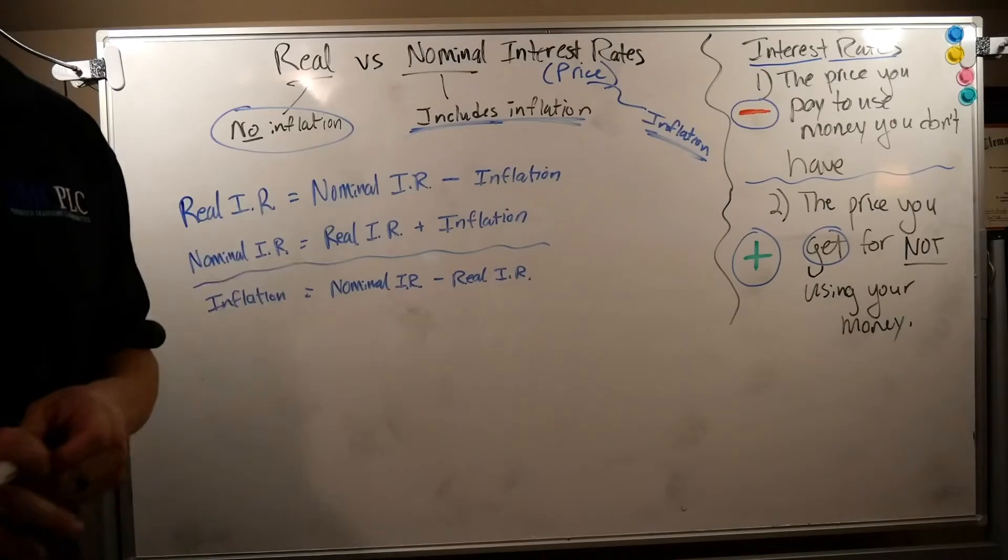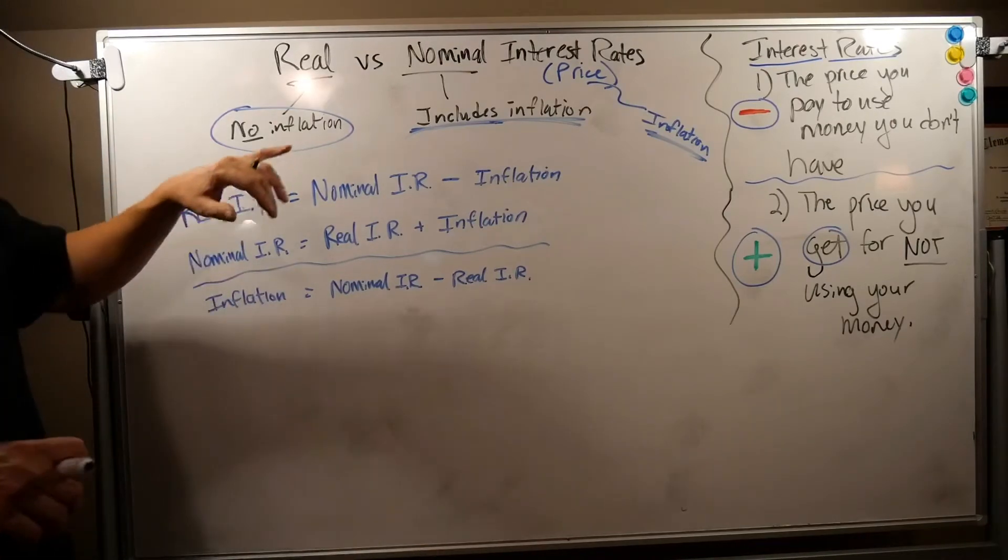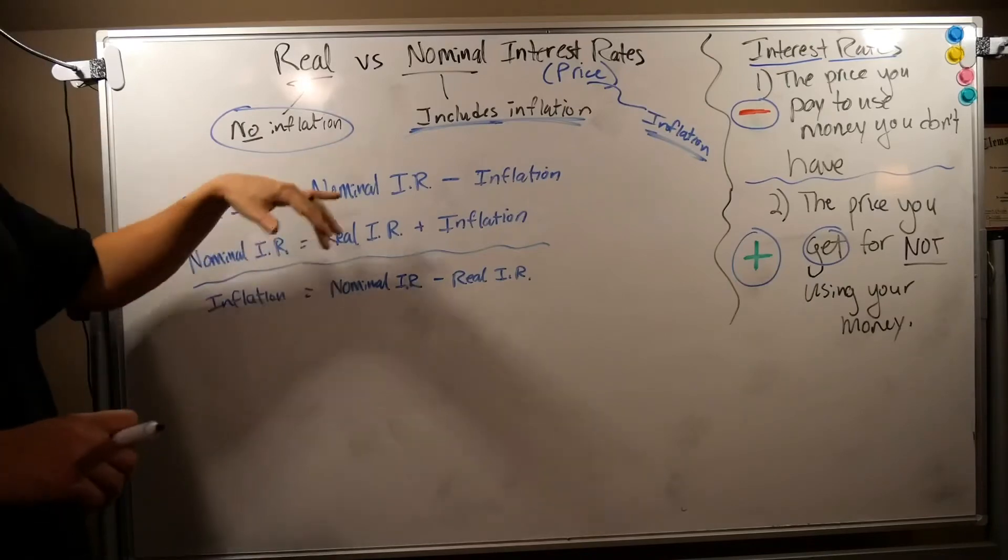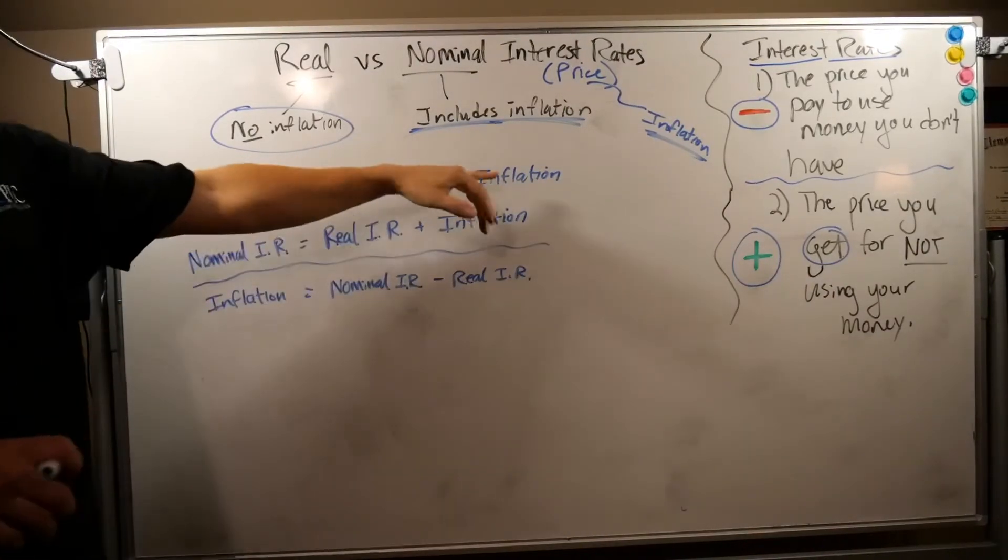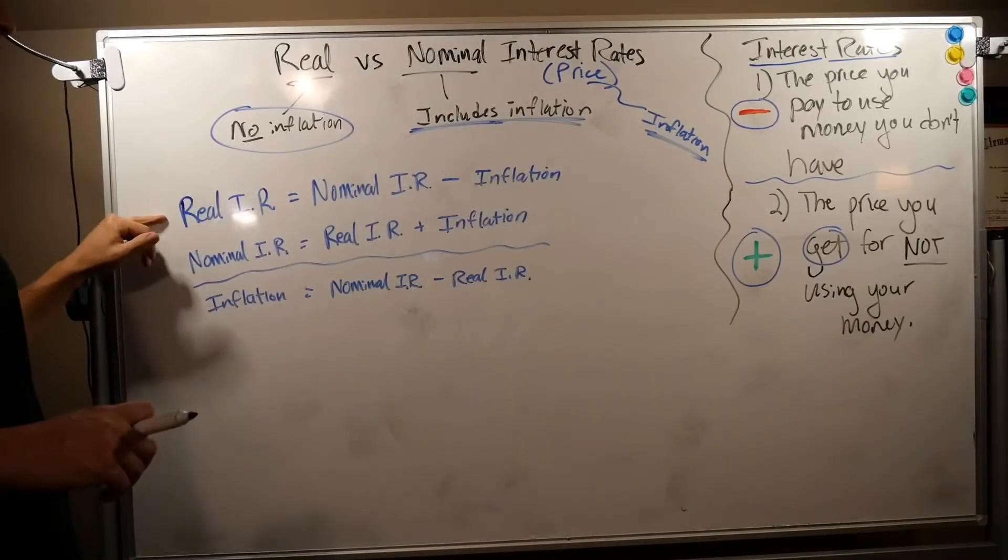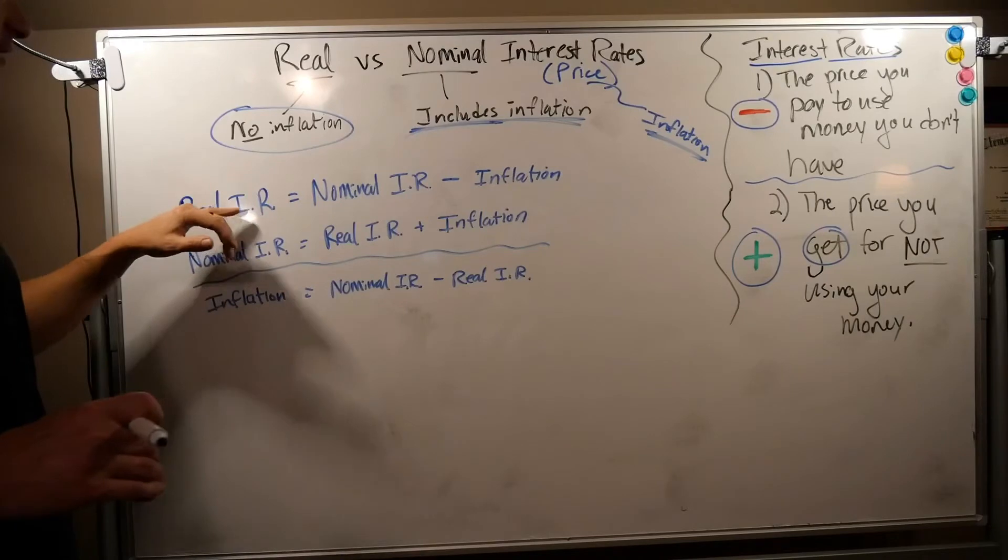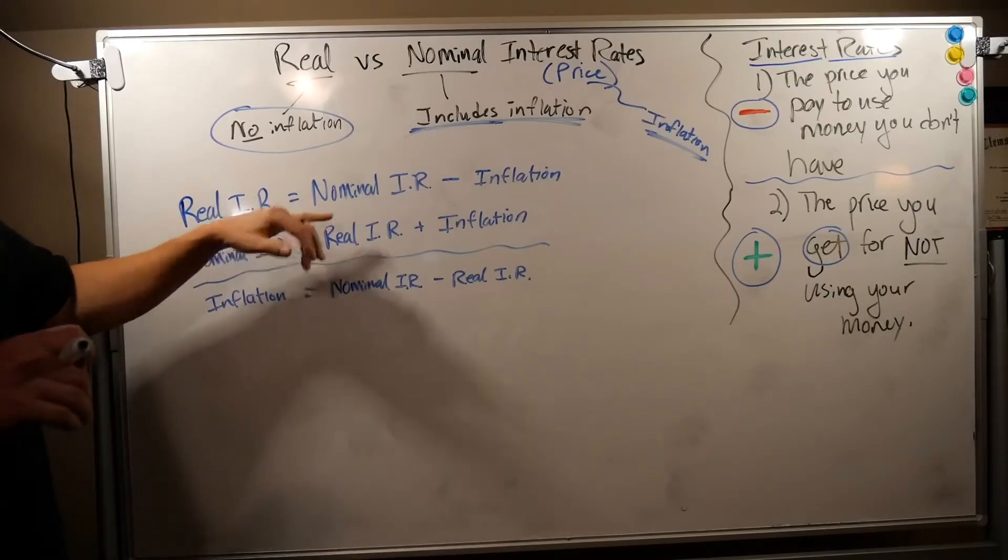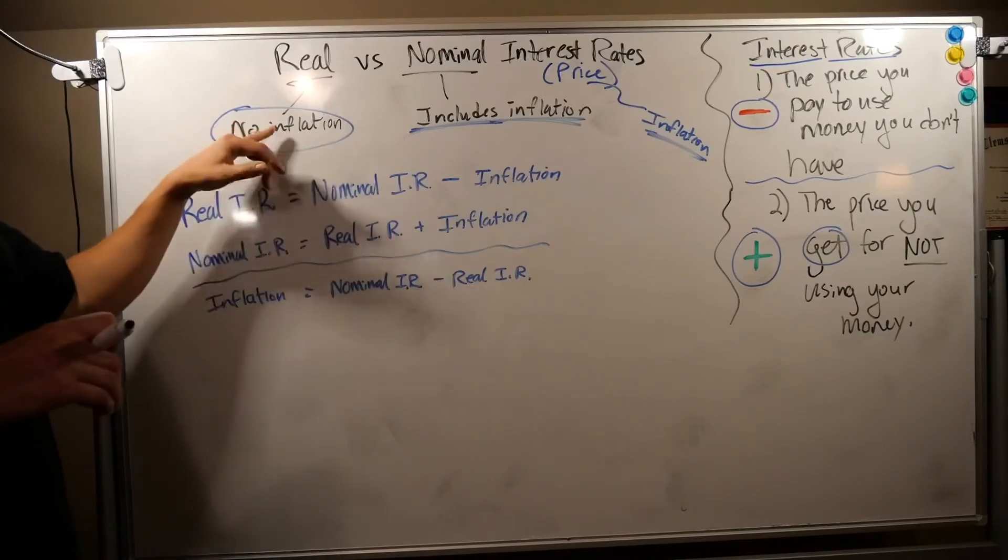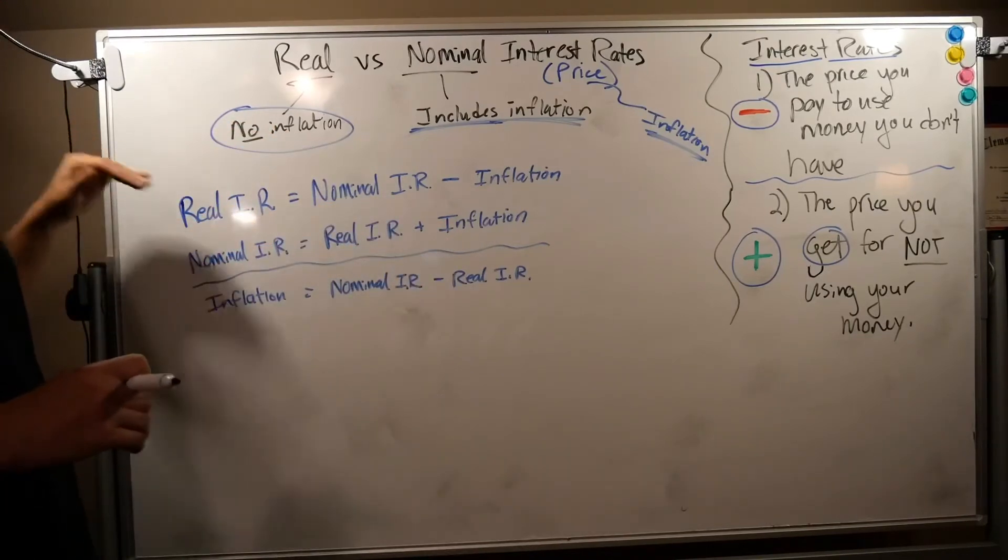The book defines: real interest rates are the equivalent of nominal interest rates minus the inflation. Remember, nominal interest rates have inflation—if you take inflation out of them, you have a real interest rate. I just abbreviated for interest rate as IR here. Nominal interest rates then are real interest rates plus inflation. So nominal includes inflation, real interest rates do not include inflation.